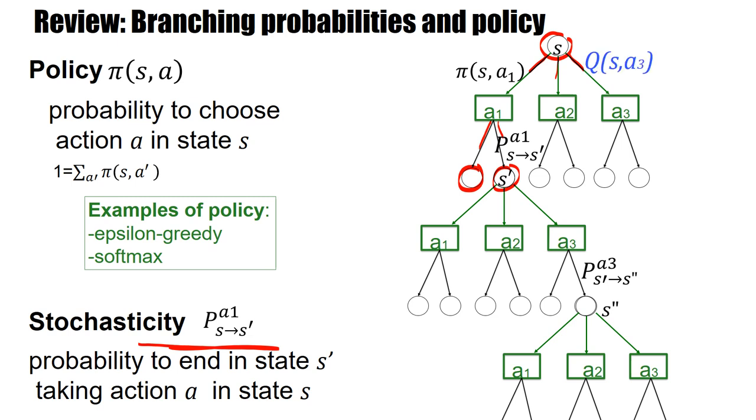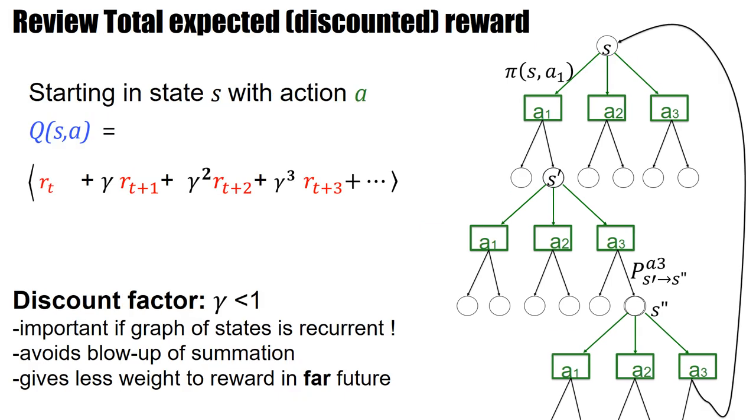And then a super important value in the context of these state action graphs is the Q value. What is this Q value? As we have seen the Q value summarizes the total discounted reward. There's a discount factor gamma and then we accumulate the reward over several time steps. And it's important that this discount factor is smaller than 1 because typical state transition graphs have these recurrent connections.